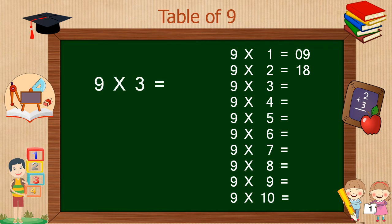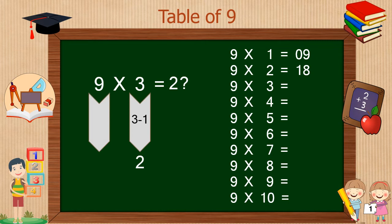Similarly, to find 9 times 3, we have to take one digit before 3, that is 3 minus 1 is 2, so 2 is our first digit. And to find the second digit, we have to subtract 2 from 9, that is 7. So 9 times 3 is 27.